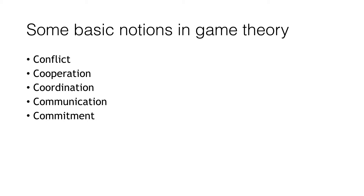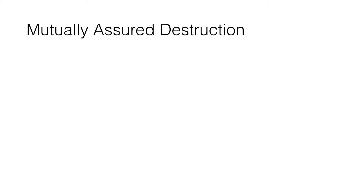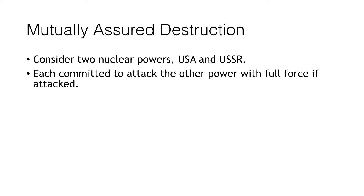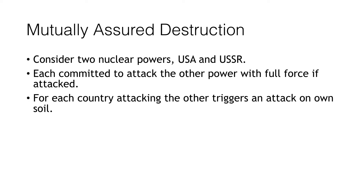Here is the idea of mutually assured destruction in a simple version. Consider two nuclear powers — let's call them USA and USSR. Each is committed to attack the other with full force if attacked. For each country, attacking the other triggers an attack on its own soil. Therefore, in equilibrium, they won't attack. That's the whole idea of mutually assured destruction. But then when you think about it, there are many problems. What if one attacks by mistake?